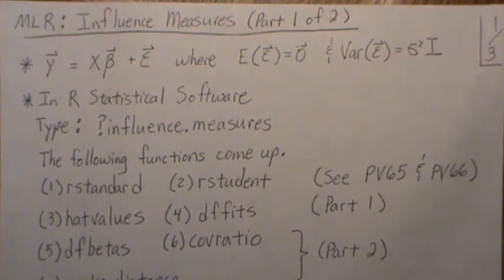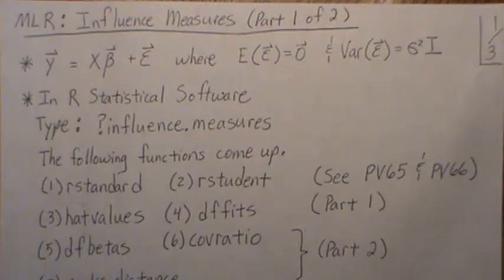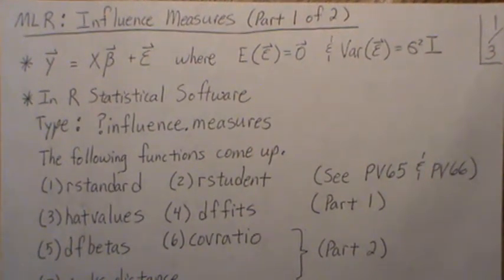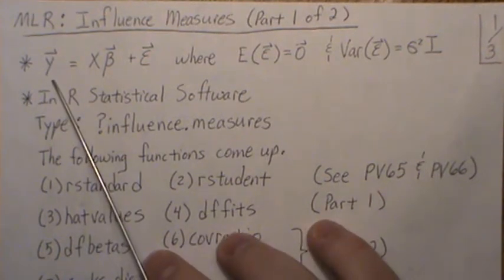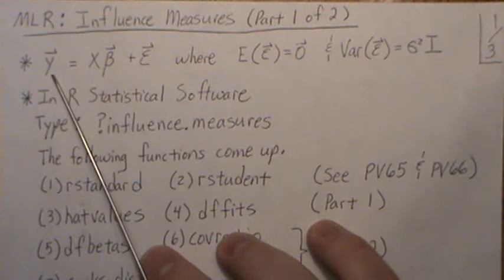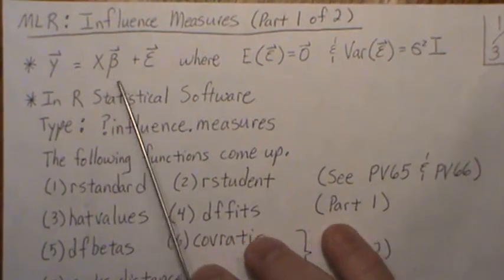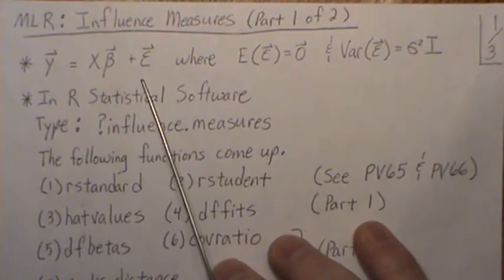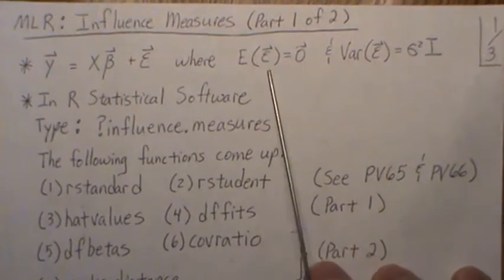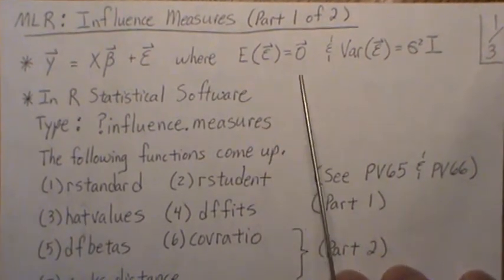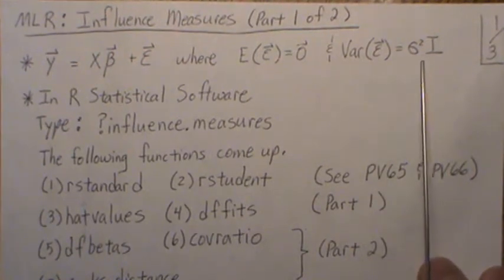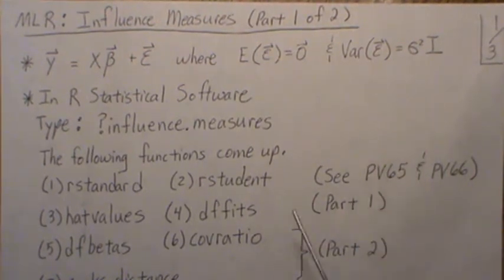Hello. In this video we're in the multiple linear regression setting and we're going to look at influence measures. This is part one of two videos. Our model is y equals X beta plus some error term, and we assume the error term has an average of zero and a variance-covariance matrix of sigma squared I.